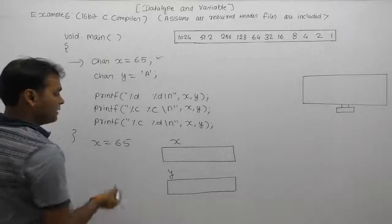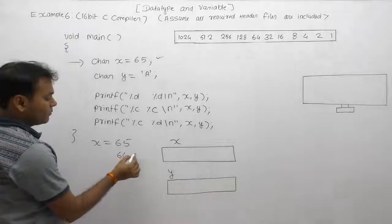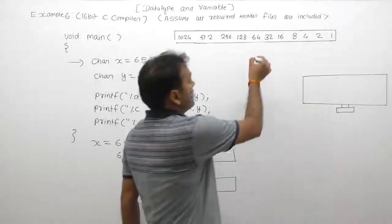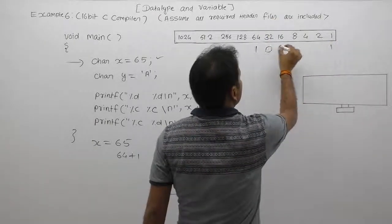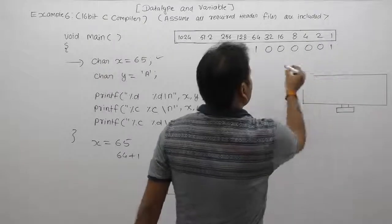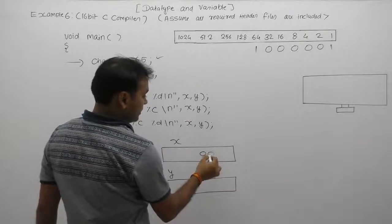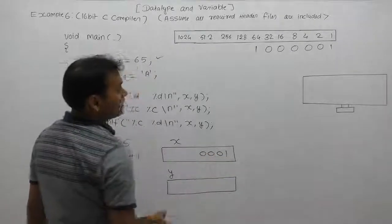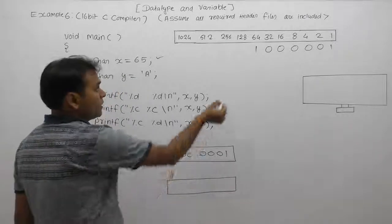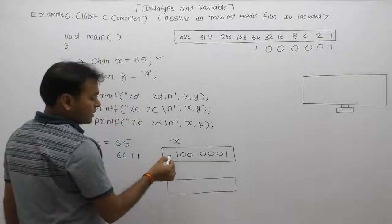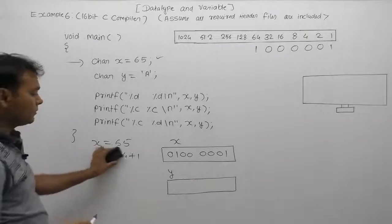In the first case, we are assigning x equals to 65 directly. With respect to 65, its binary number — 65 is equivalent to 64 plus 1. The binary value of 64 is one followed by zeros. So the binary representation is 1000001 — that is seven bits — with remaining bits set to zero by default. This is the binary representation of 65.